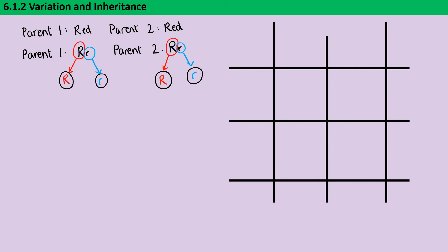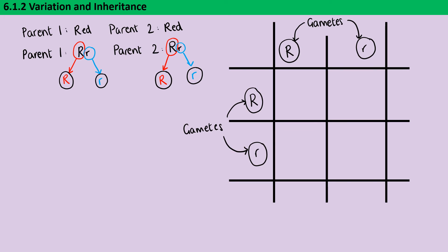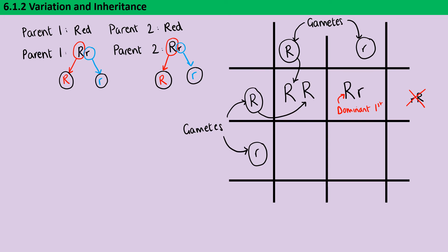Now ready to complete the Punnett square cross. Into the four outer boxes I add the genotypes of the gametes, again circled to show they're gametes. Then I cross-pollinate to fill in the four inner boxes. The dominant allele from the first parent at the top comes down, and the dominant allele from the parent on the left also goes into that box. The convention is to always put the dominant allele first in the heterozygote — at A-level we really want to see that dominant allele having precedence in the genotype.